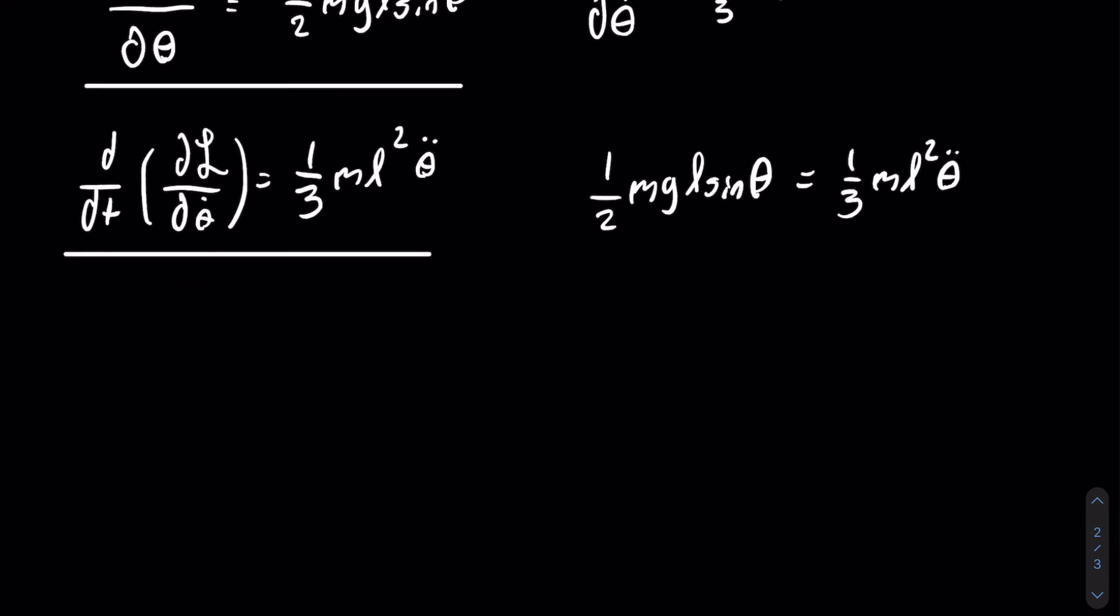Fractions are a bit messy, so I'm going to multiply both sides by six, and we get that three mgL sine of theta is equal to two mL squared theta double dot. Also, as you can see, one of the L's and the m's will cancel out, and we are left with three g sine of theta is equal to two L theta double dot.